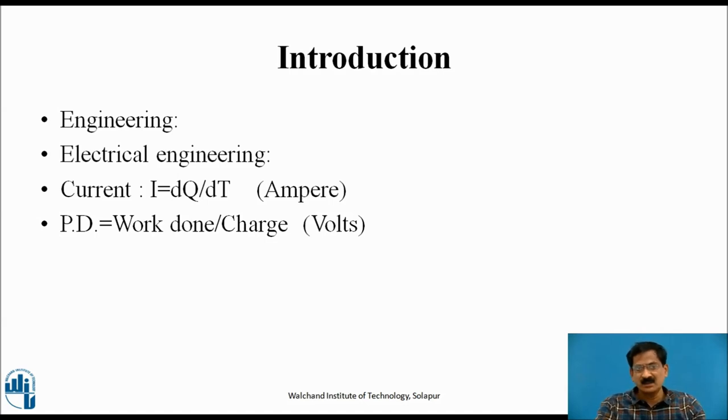Let us define current. Current is the flow of electrons. Mathematically, it is given by i equals dq by dt, that is the rate of change of charge per unit time. The unit of current is ampere.